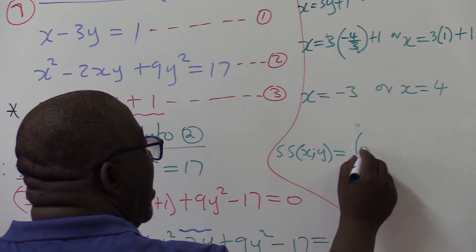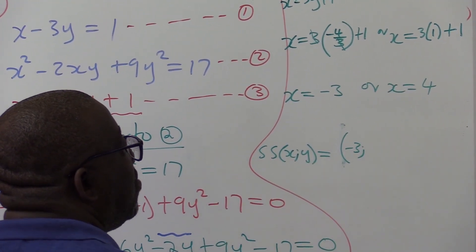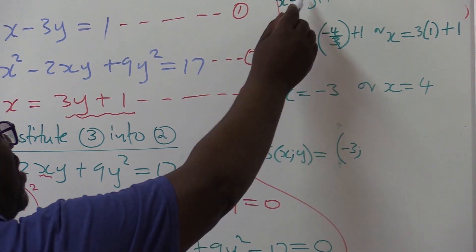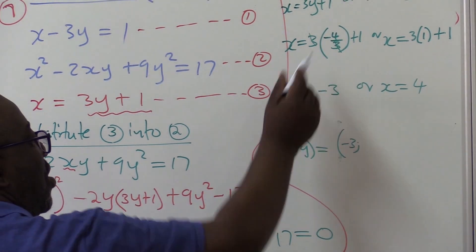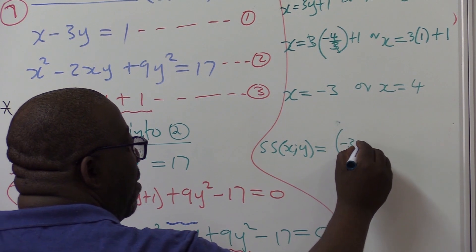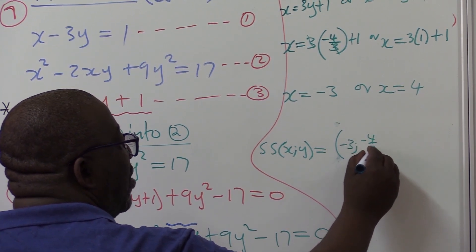If x was minus 3, what is the corresponding y value? Remember, the y that you substituted here was this to get this one. So the value of y will be minus 4 over 3.